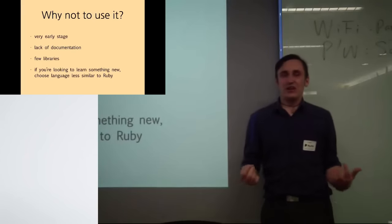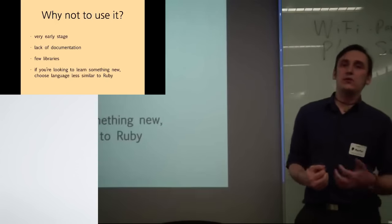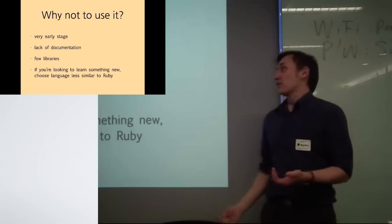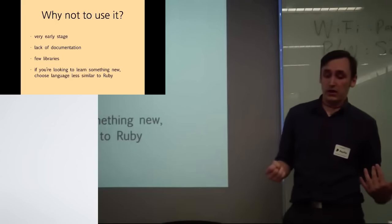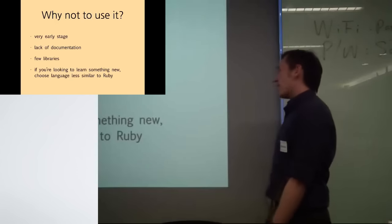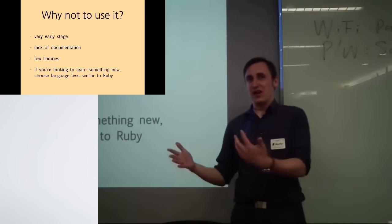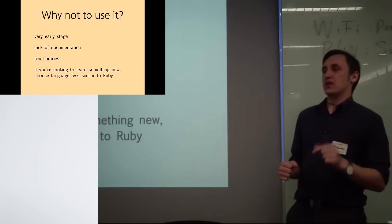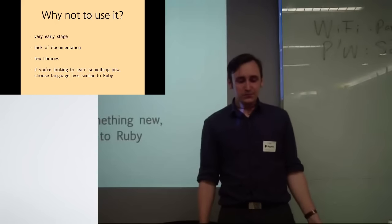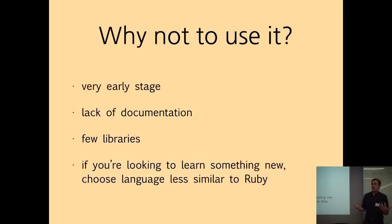I wouldn't recommend to use Crystal in production right now, because it is still at a very early stage and maybe when the new version is released, your code will not run anymore. There is also a lack of documentation. So of course you can read the source code and it's very easy, but it takes much more time than just reading well-written documentation. There are a few libraries. The most popular library, except for the language itself, has like 150 stars on GitHub. So as you see, the community is still very small, but there is already a web framework and there is already a library that connects Crystal with PostgreSQL, so you can write some small web applications. And the last reason why I do not recommend it is that if you want to learn something new, you should go as far from Ruby as possible. You should learn something like Rust or Erlang or maybe something totally different like Julia. So Crystal is too similar to Ruby to really broaden your horizons.